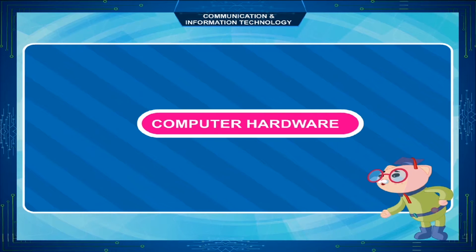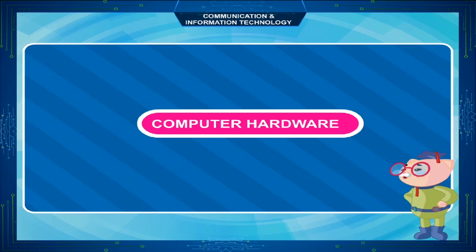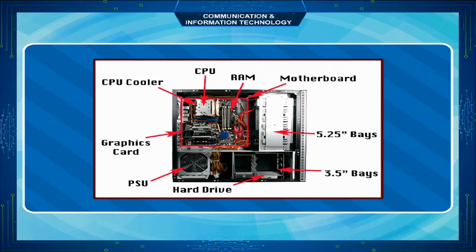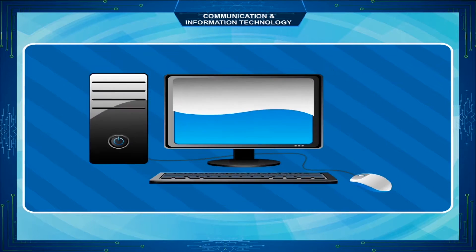Computer Hardware. All the mechanical and electronic parts of the computer system that can be touched and seen are known as hardware. These parts physically construct a computer. All the physical devices are hardware.